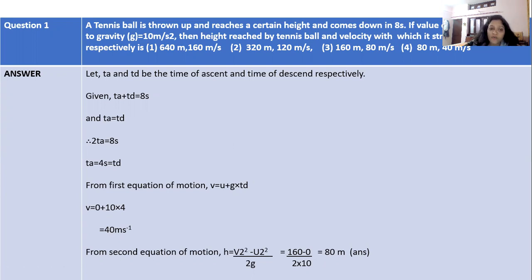Now, comes to the second equation of motion. It says h = V² - U² / 2g. We will put the value V² as 40 m/s squared minus U value is 0 divided by 2 × 10. Finally, we will get the value as 80 meter. This is our answer.